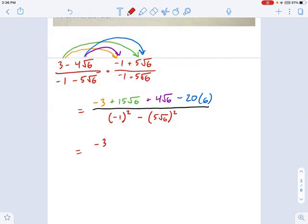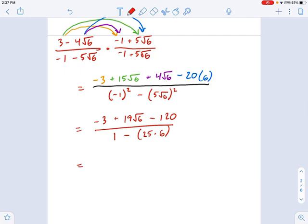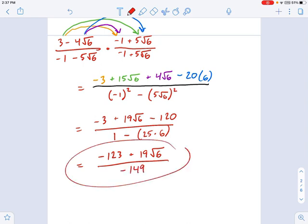This becomes negative 3 plus 19 radical 6 minus 120 on top. And on bottom, it's going to be 1 minus 25 times 6. We square the 5 and we square the radical 6. So we work that down a little more. We get negative 3 minus 120, that's negative 123 plus 19 radical 6. And on the bottom, that's going to be 1 minus 150, negative 149. So that looks great.